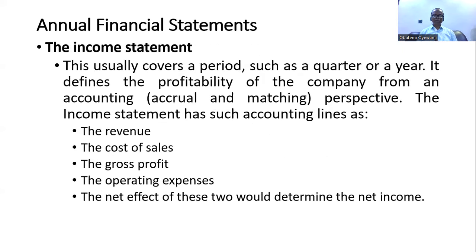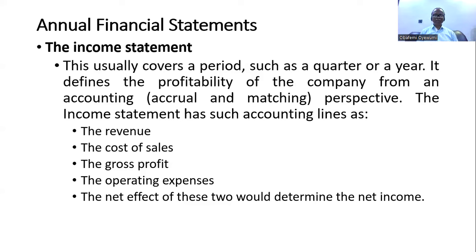The second component is the income statement. This usually covers a period, such as a quarter — it could be monthly, weekly, or per annum, depending on the schedule of management. It is expected that at the end of every year, every company should have an idea of the profit they have made. It defines the profitability of the company from an accrual and matching perspective.